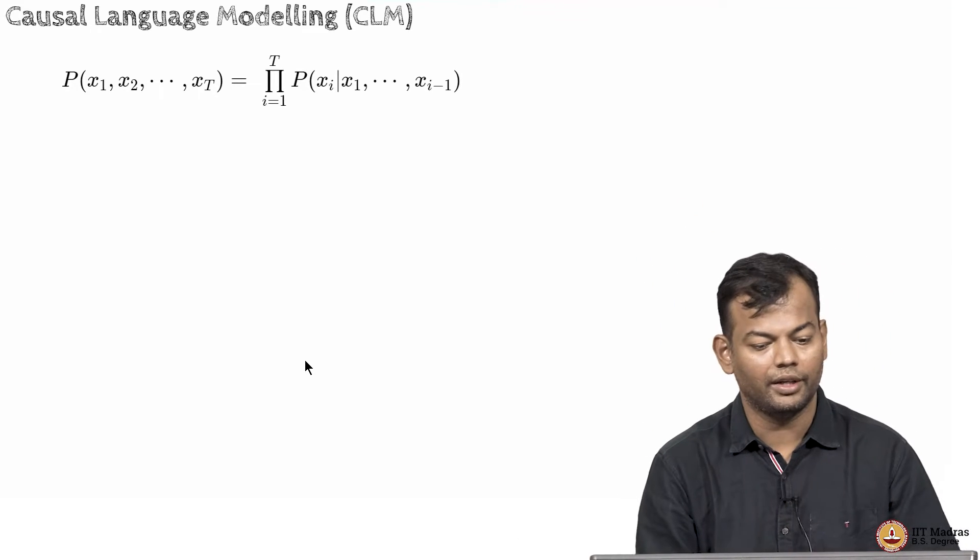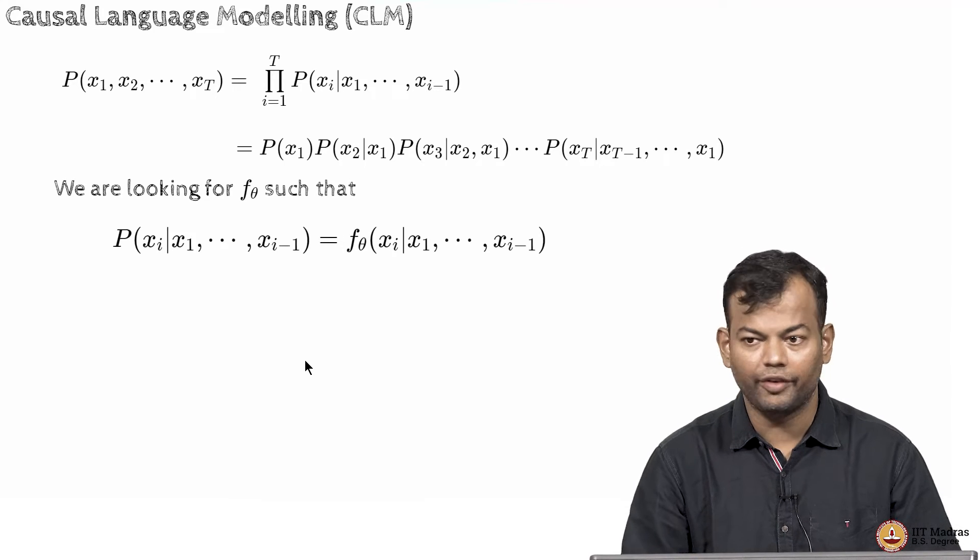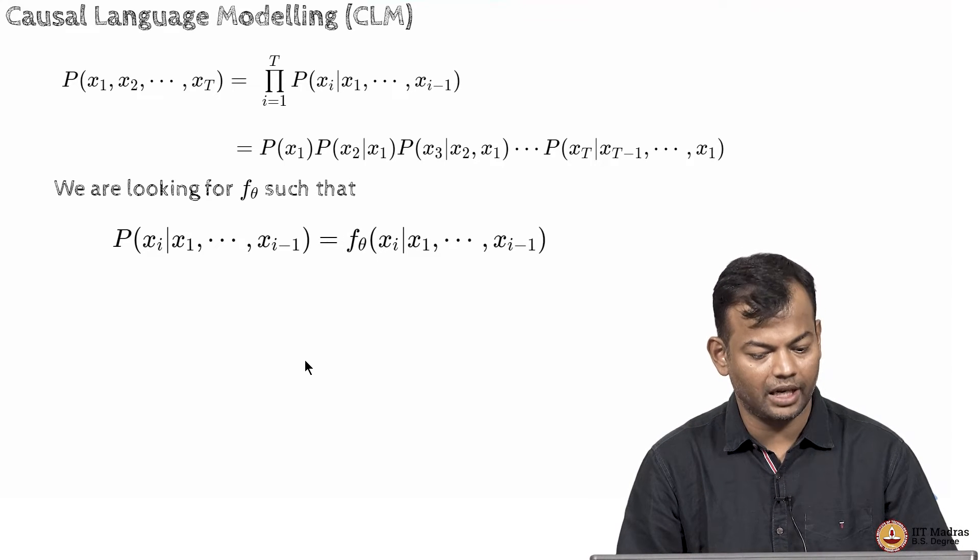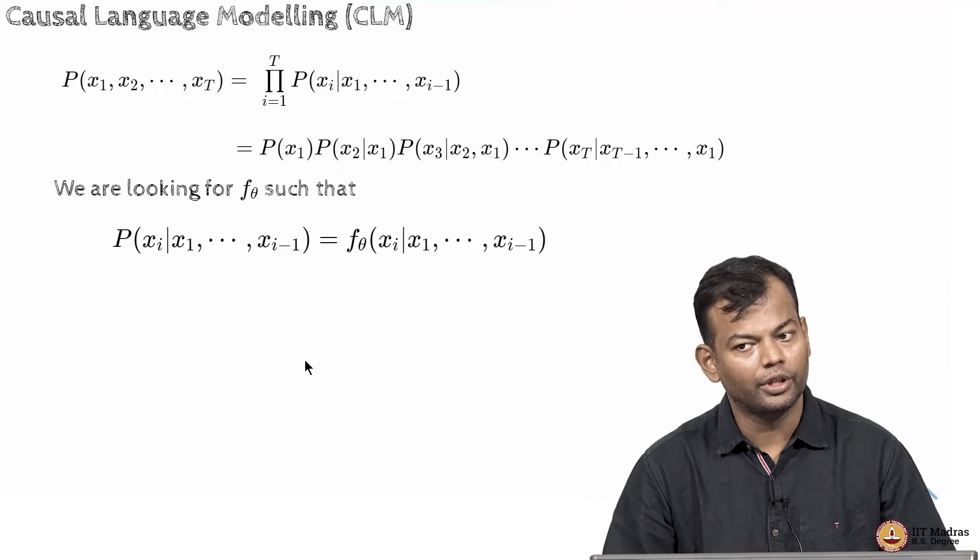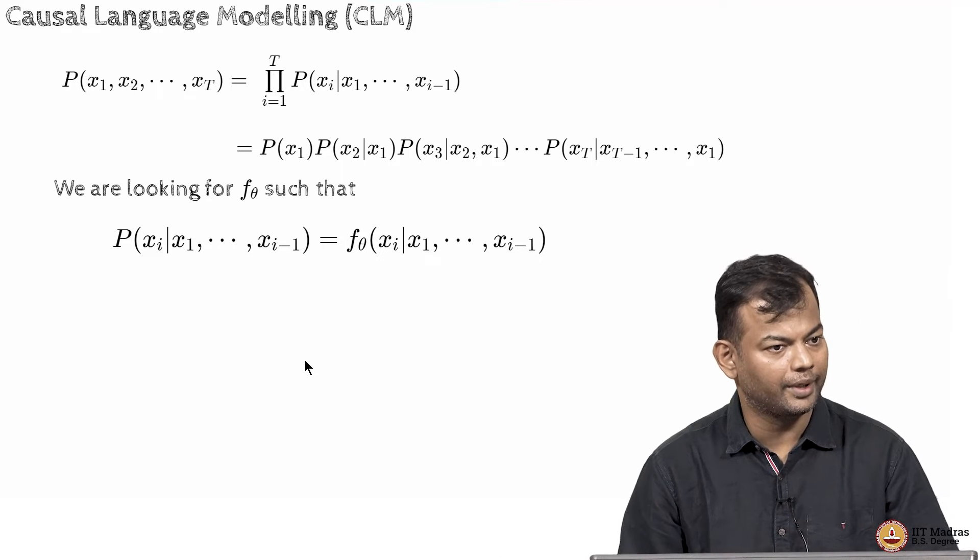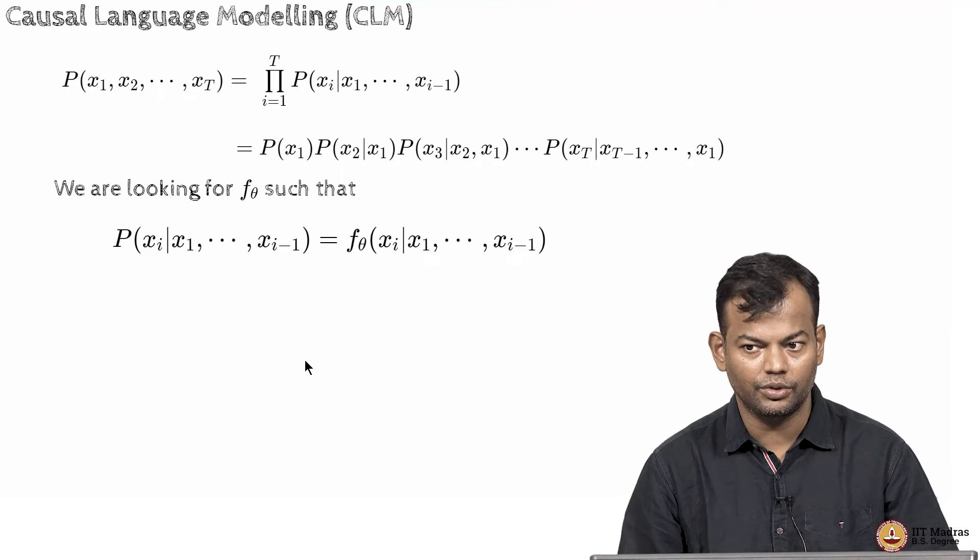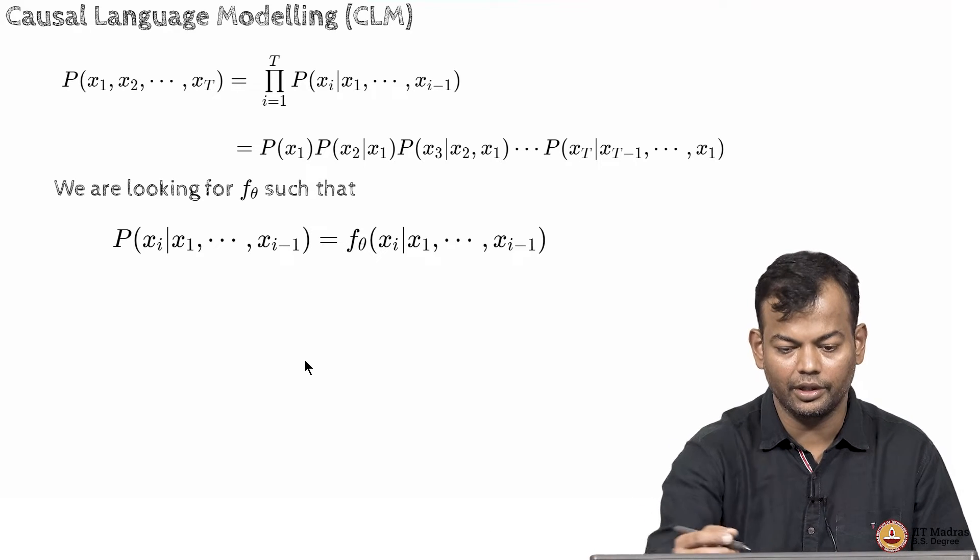So, cause what has been given to you and you have to predict the next word. Okay? We are looking for an f theta, a function which has parameters theta, such that when you pass the parameters to it, it gives you a probability for the most likely next token. Right? Or it gives you a distribution over the vocabulary. Is that okay everyone? You see these equations are clear to you?